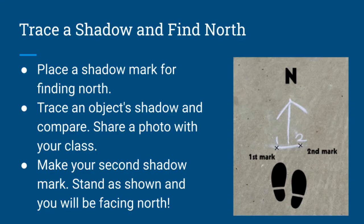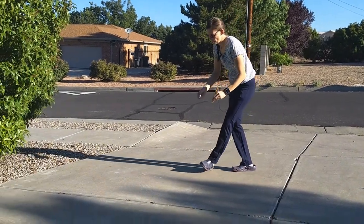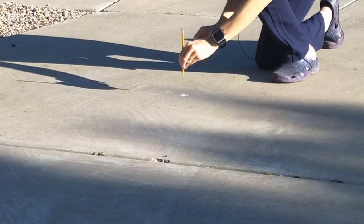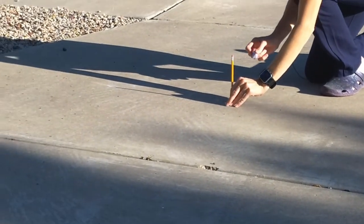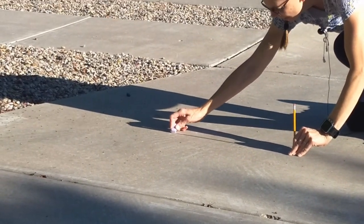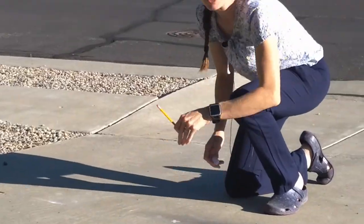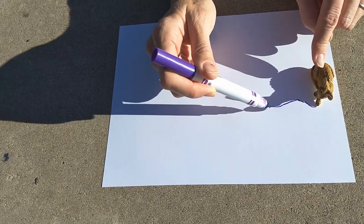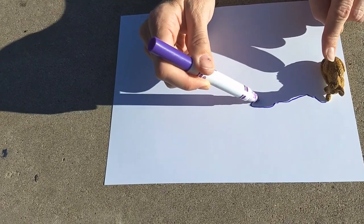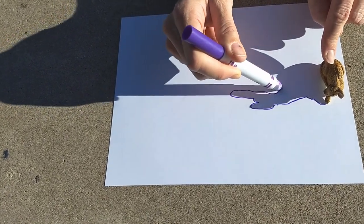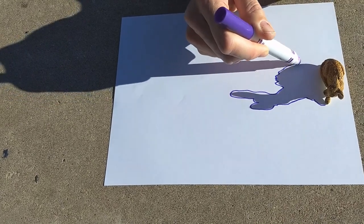For your STEM assignment today, I want you to do two things. The first is to find north using a shadow, and the second is to trace a shadow of a toy or person or other object that you have. Since we have to wait about 15 minutes between our first and second shadows, first you should get a stick or pencil and go outside, mark the spot where you're putting it, and then mark where the first shadow is. Then find an object whose shadow you want to trace. You can do this outside with the sun with chalk, or you can get a pencil and paper if you don't have chalk.